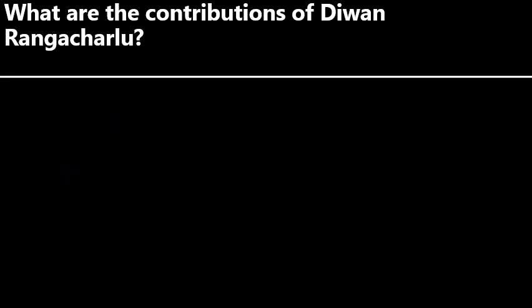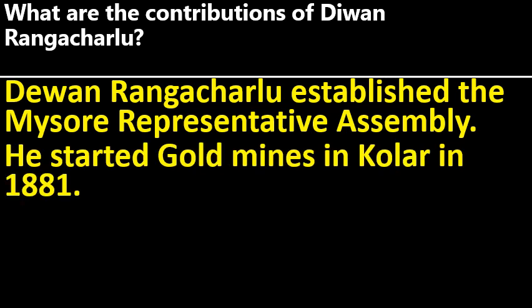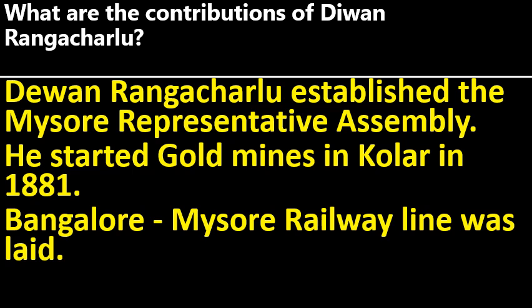What are the contributions of Diwan Rangacharlu? Rangacharlu established a Mysore Representative Assembly. He started gold mines in Kolar in 1881. The Bangalore–Mysore railway line was also laid under his tenure.